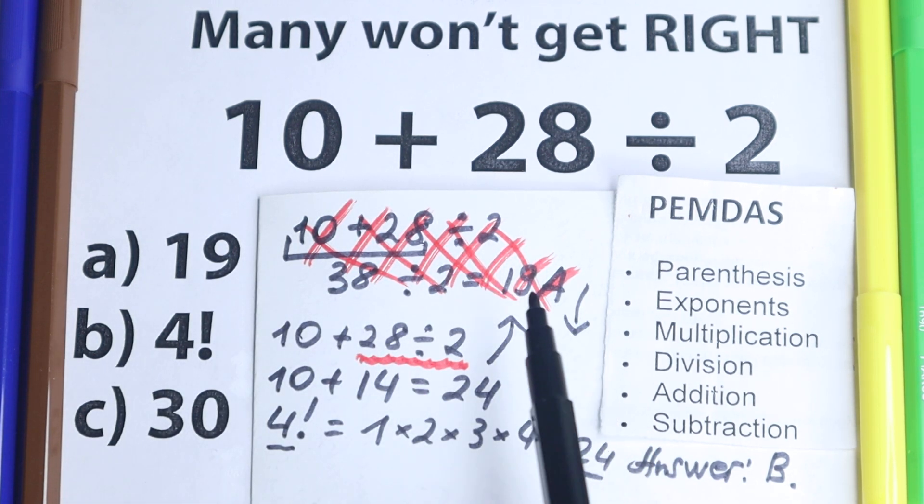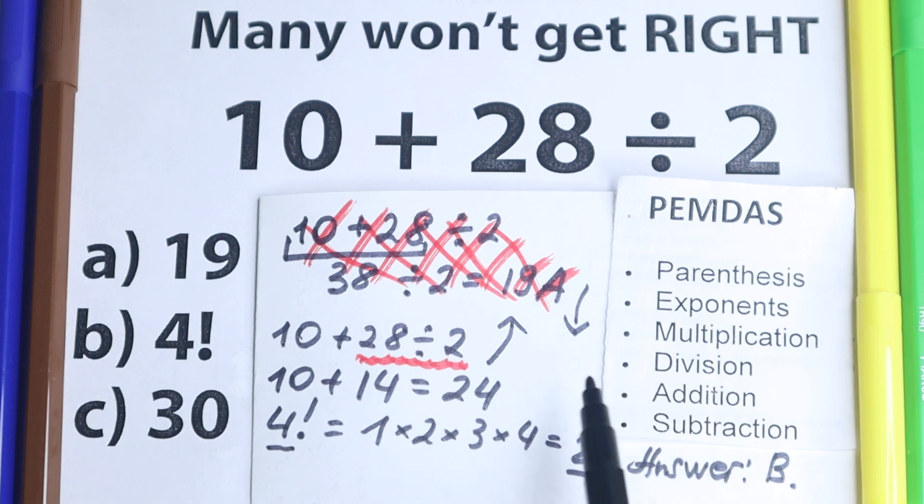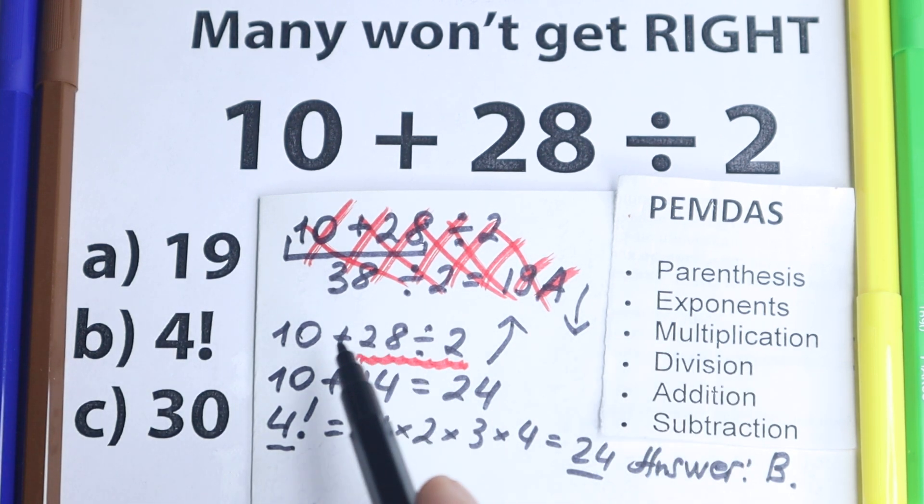They go from left to right, and they forget about a correct order of operation, which is, of course, PEMDAS, and other order of operations. Doesn't matter what order of operation you select, but then you have a correct answer. Because every time, multiplication or division, this is before addition and subtraction, which is really important moment.